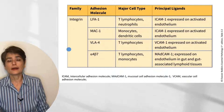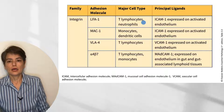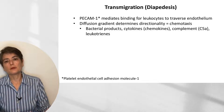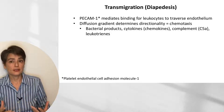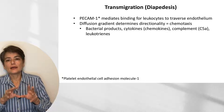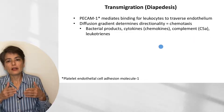The adhesion molecules involved include ICAM-1 (intracellular adhesion molecule 1), vascular cell adhesion molecule, and mucosal cell adhesion molecule. Transmigration is mediated by platelet endothelial cell adhesion molecule 1, also known as CD31. The cell extends a little pseudopod and follows a concentration gradient made up of bacterial products, cytokines, chemokines, complement, and leukotrienes — this process of following that gradient is called chemotaxis.